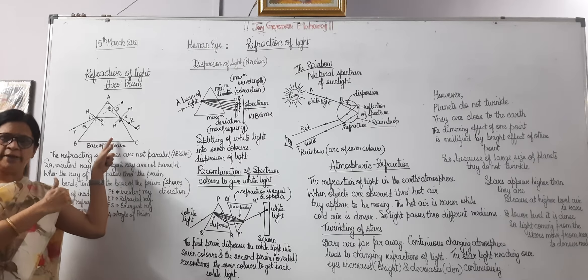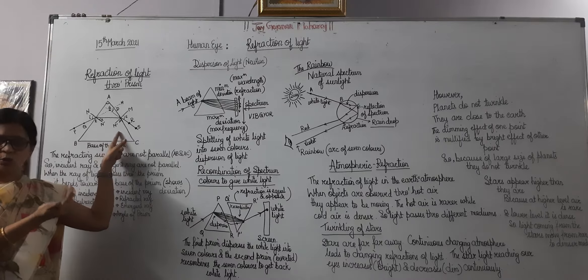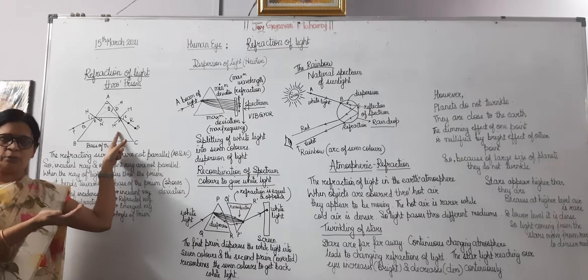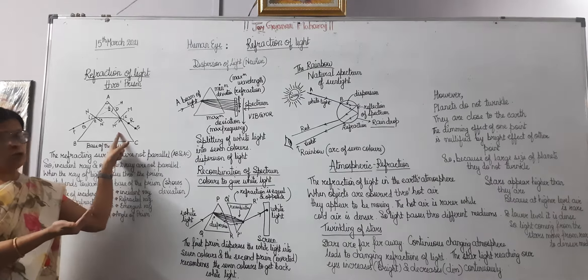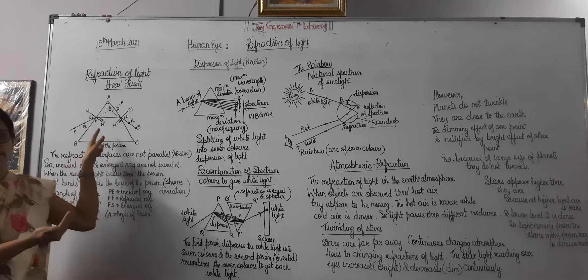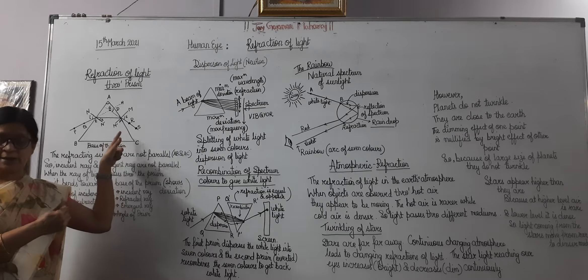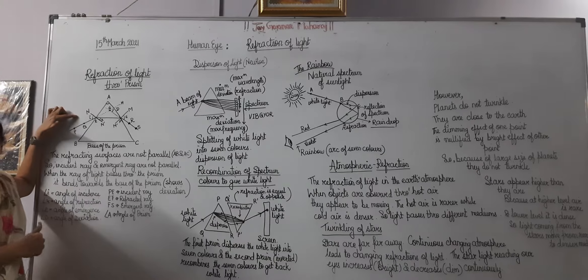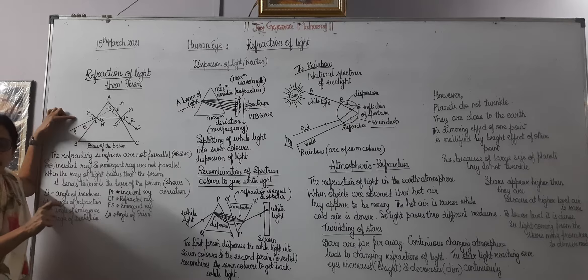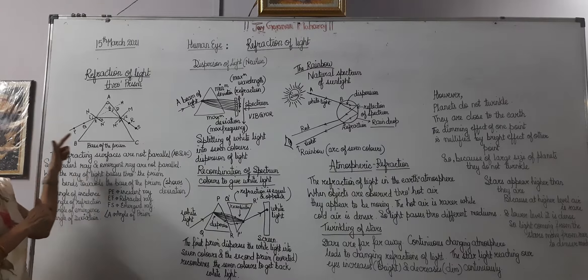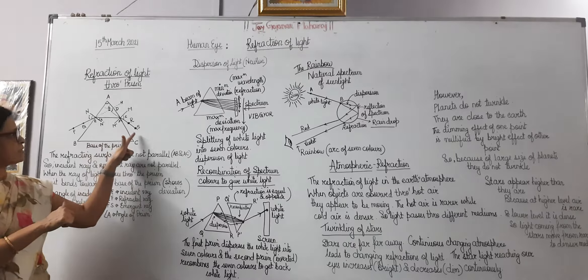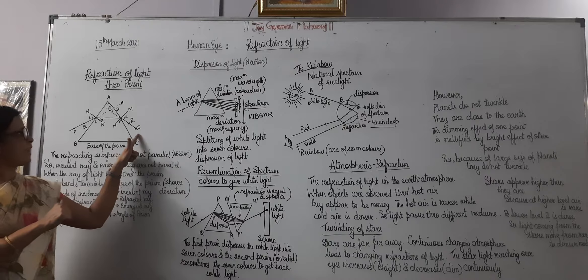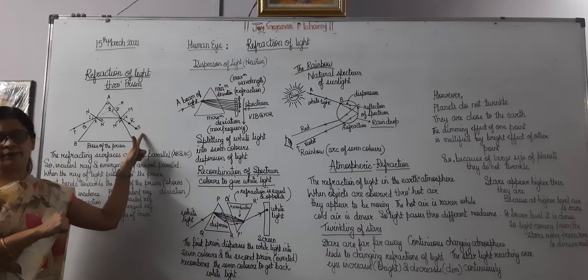It is moving from the rare media to the denser media. And when this light comes out, it is moving away from the normal because the light moves from a denser media to the rare media. So remember that PE is the incident ray, EF is the refracted ray, and FS is the emergent ray. This is the angle of incidence — the incident ray making an angle with the normal. Then the angle of refraction means the angle between the refracted ray and the normal. And the emergent angle is the angle between the normal and the ray of emergence.